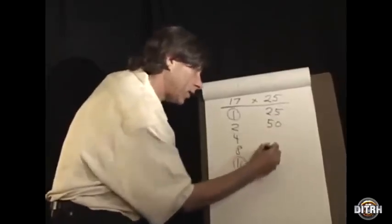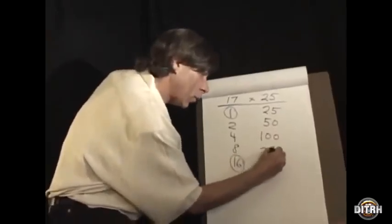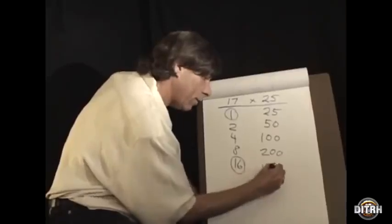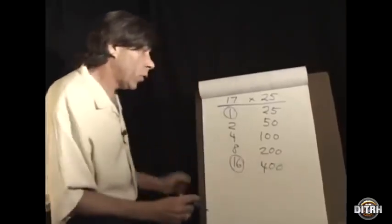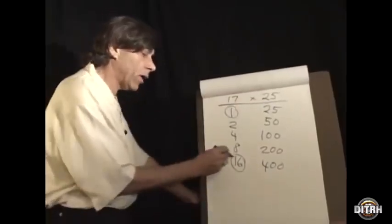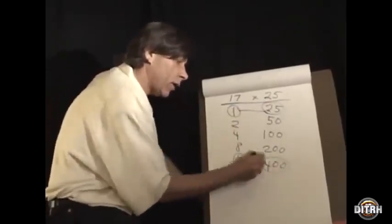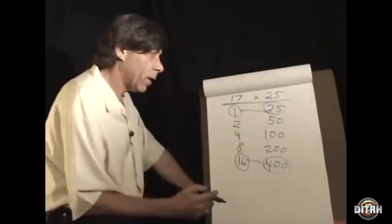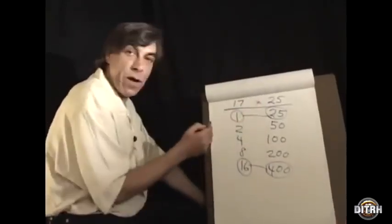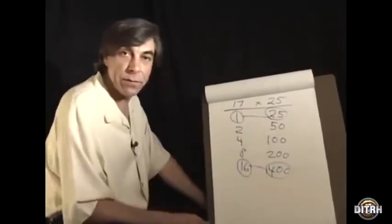So seventeen times twenty-five, I've identified the elements of seventeen as one plus sixteen. And in this column I write the number twenty-five and I just keep doubling it. Twice twenty-five is fifty, twice that, one hundred, twice that, two hundred, twice that, four hundred. So in order to know the product of seventeen times twenty-five, we just have to look at which numbers are circled over here, and circle the corresponding ones over here, and add them together. So seventeen times twenty-five is four hundred plus twenty-five.